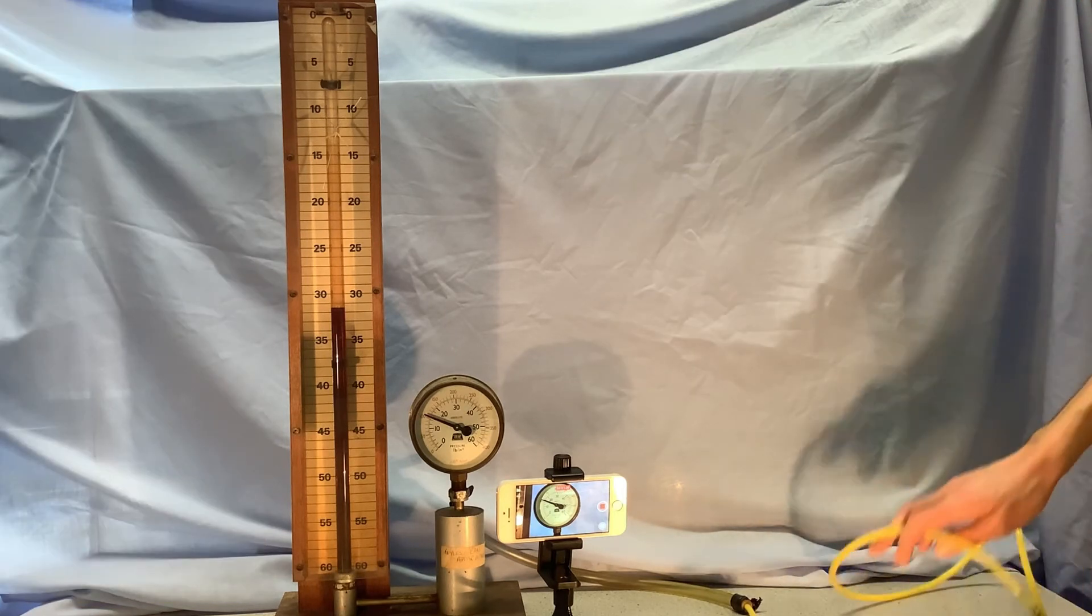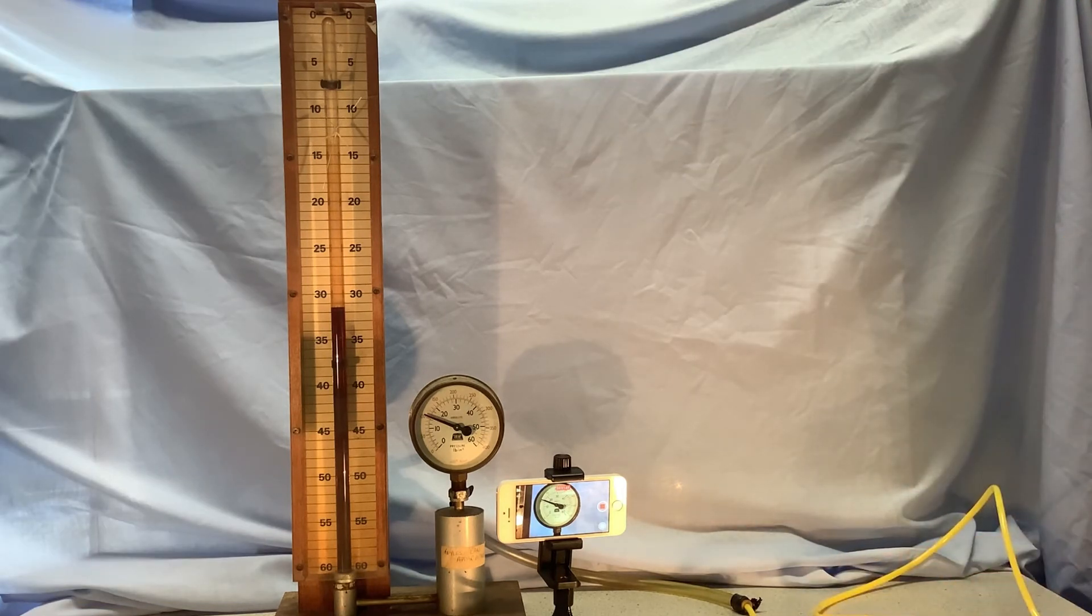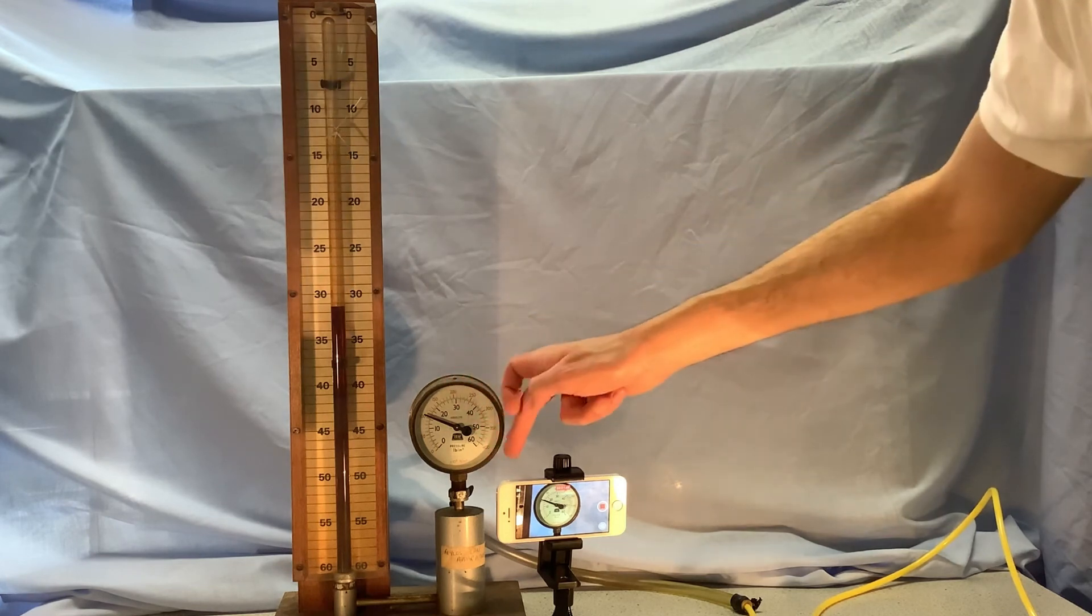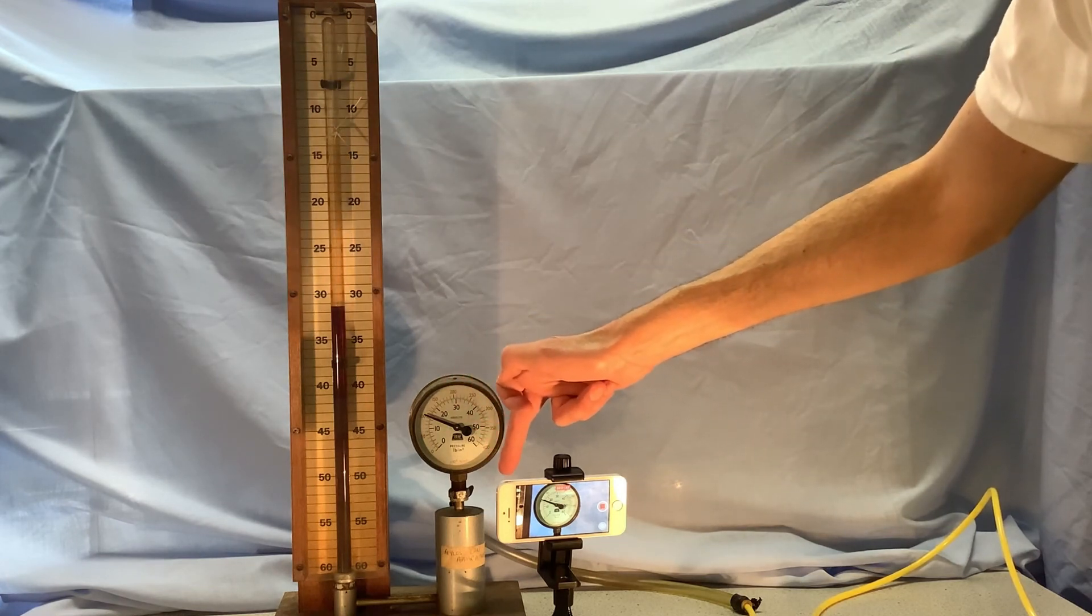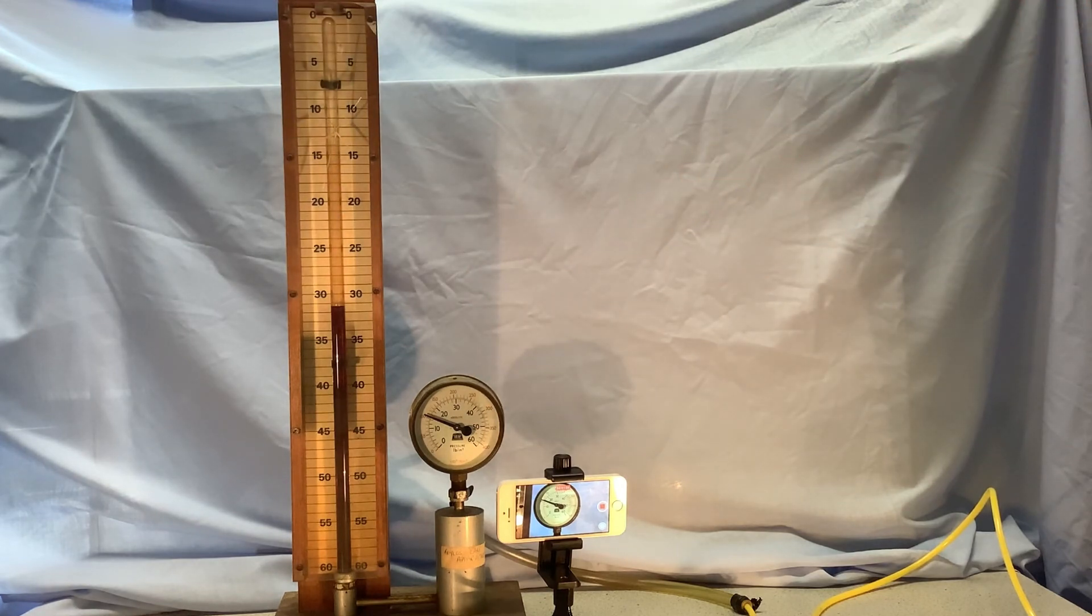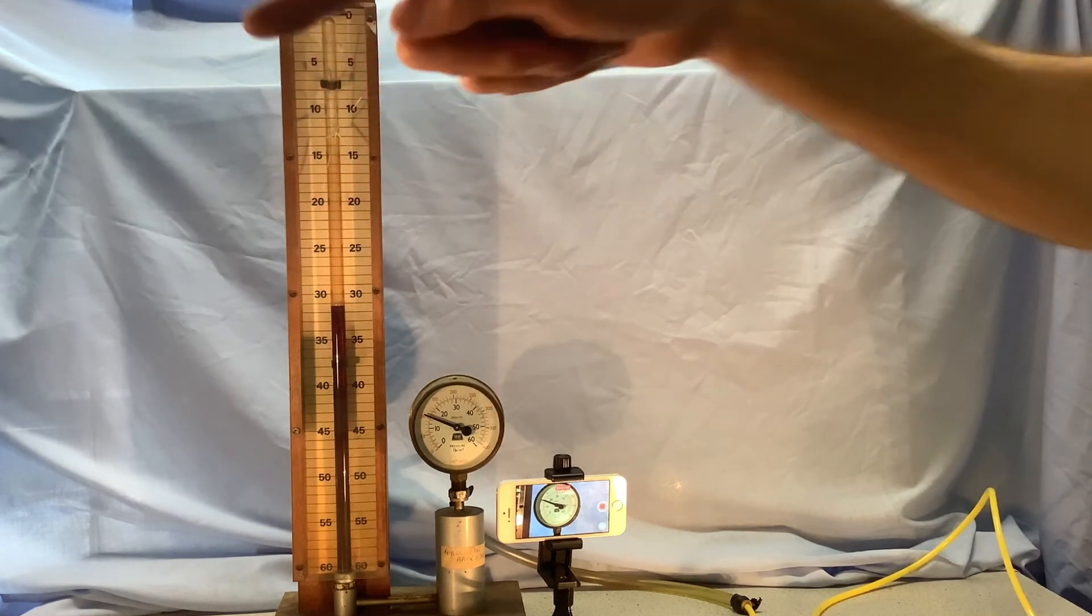Now one thing to bear in mind is that there is going to be some parallax error because my second video camera isn't looking perfectly straight on. It's not too bad because the actual camera element is here which is reasonably well in line and the main camera is maybe not also perfectly aligned.